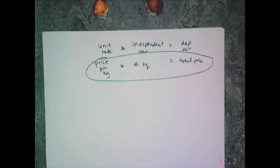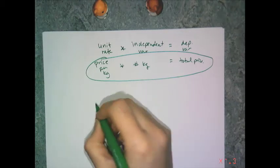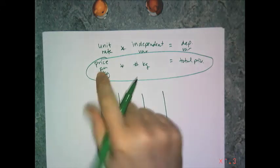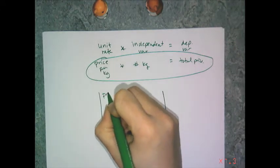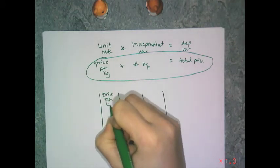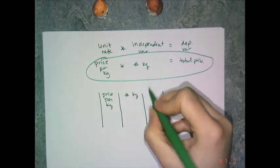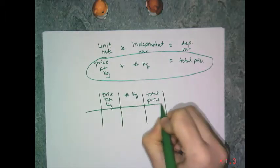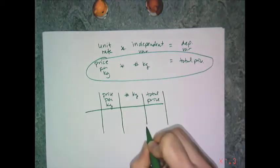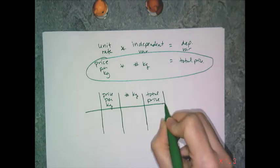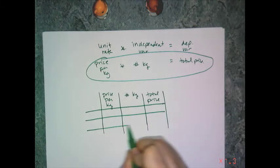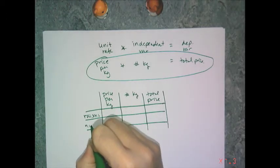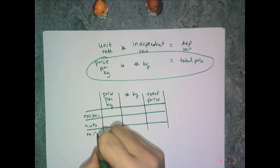I can make a table, and this table will work for all mixture problems. The columns of the table follow the fundamental equation: price per kilogram, number of kilograms, and total price. The rows are the components of the mixture and the mixture itself — so raisins, nuts, and the mix.